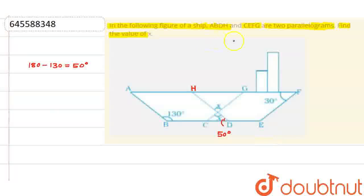Now talk about the another parallelogram which is CEFG. This is 30 degrees and we know that the opposite angles of the parallelogram are equal. That means this angle will be also 30 degrees.